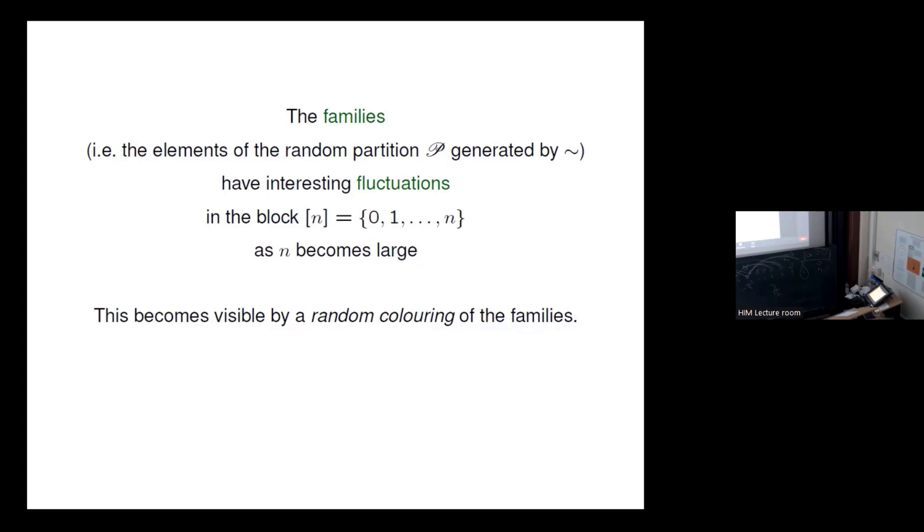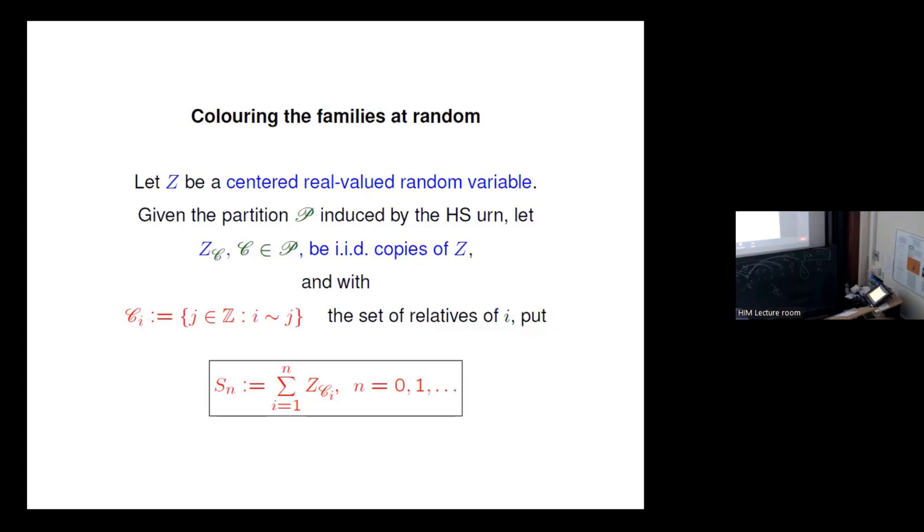Okay, now an important message of this proposition two is if two lineages meet, they meet at scale n. You have zero and n and if they meet they meet at scale n and on that scale it's still heavy tailed.